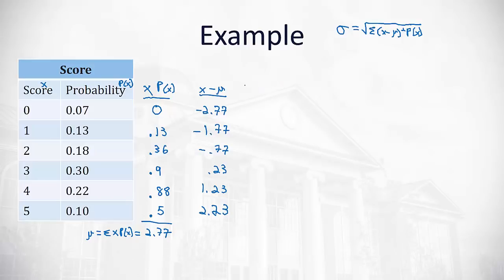Next, the formula wants to square those values, so we'll take each of those x minus μ values we found and square each of them. So 2.77 squared, remember when we square we should always end up positive, 7.67. I'm just going to round to two decimal places. 1.77 squared is 3.13.